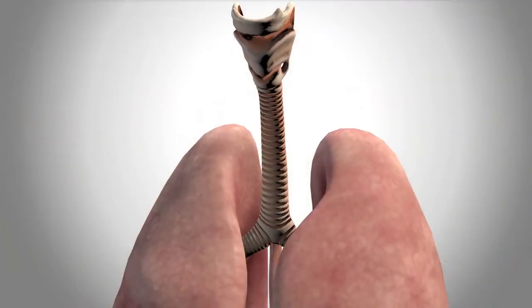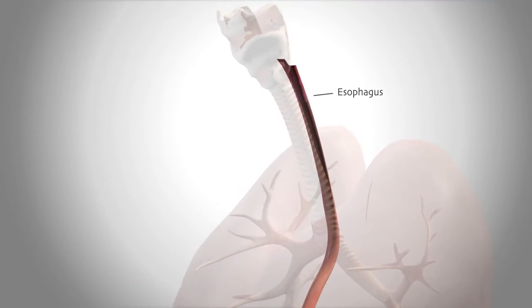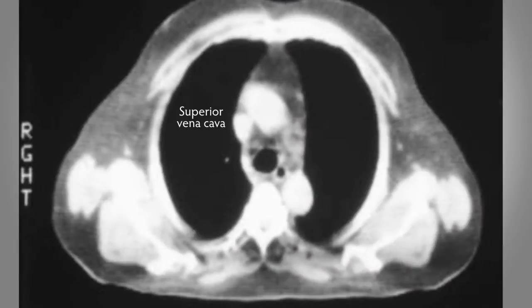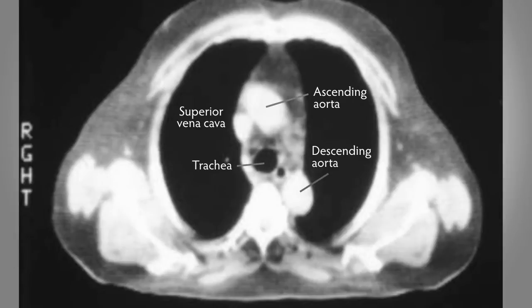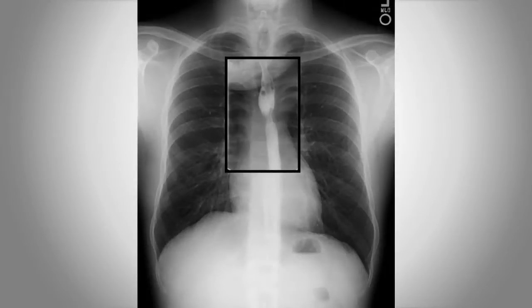Located behind the trachea and the tracheal bifurcation is the food tube, or the esophagus. If we look at this cross section, we can see the superior vena cava, the ascending and descending aorta, the trachea, and just behind it the esophagus. If we have the patient swallow radiopaque contrast material like barium, we can see it fill the esophagus from top to bottom by peristalsis.